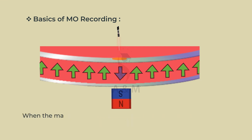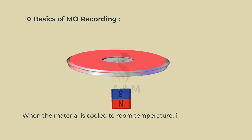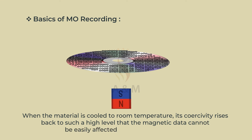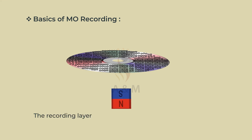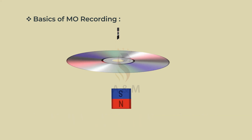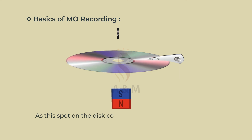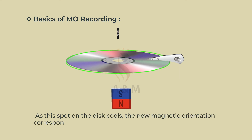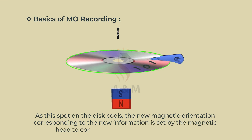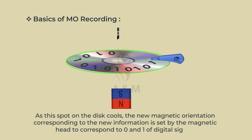When the material is cooled to room temperature, its coercivity rises back to such a high level that the magnetic data cannot be easily affected by the magnetic fields. The recording layer is heated by the laser to a point where its magnetic orientation is dissipated. As this spot on the disk cools, the new magnetic orientation corresponding to the new information is set by the magnetic head to correspond to 0 and 1 of digital signals.